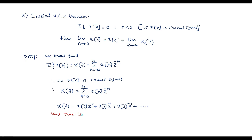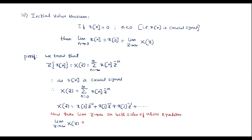Now, take the limit as z tends to infinity on both sides of the above equation. The limit as z tends to infinity of x of z on the left-hand side is equal to: the first term gives x of 0, and for the second term, 1 over z as z tends to infinity is 0, so all remaining terms will be 0.